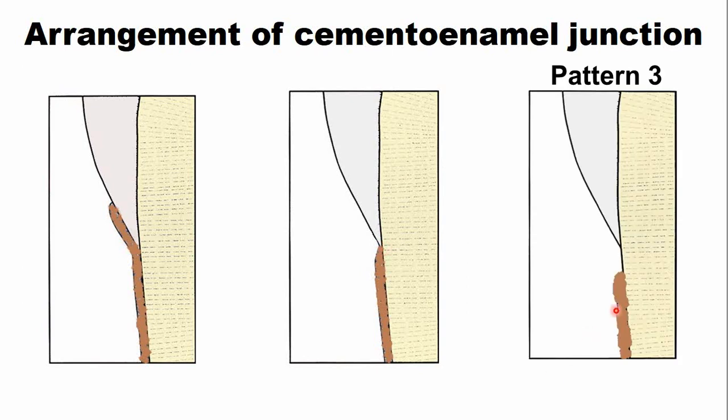In pattern three, you can see there is a gap between cementum. So this is cementum and this is the enamel. There's a gap in between the enamel and the cementum. So this is pattern three and it occurs in around 10% of the ground sections.